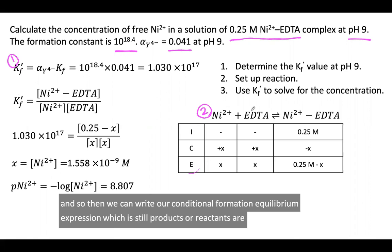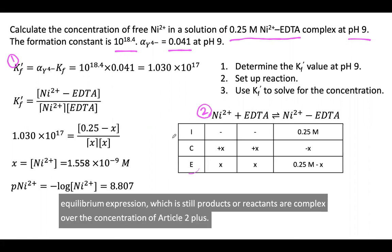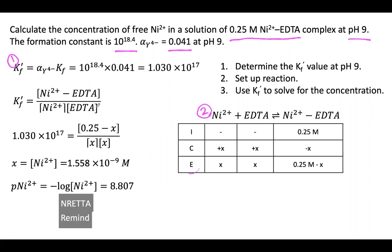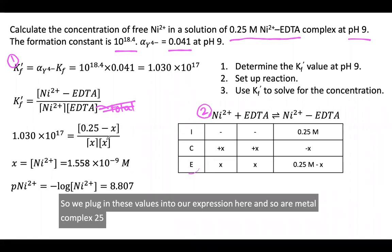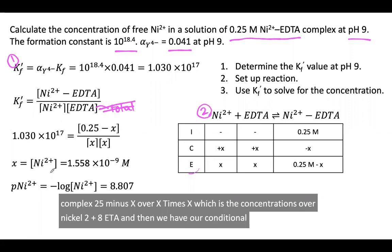We can write our conditional formation equilibrium expression, which is still products over reactants, complex over the concentration of our Ni2+ and our EDTA. We plug in these values into our expression here. Our metal complex, 0.25 minus X over X times X, which is the concentrations of Ni2+ and EDTA, and then we have our conditional formation constant which we just calculated.